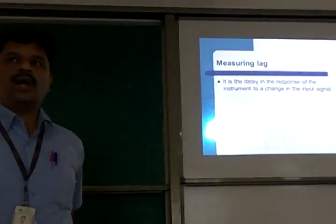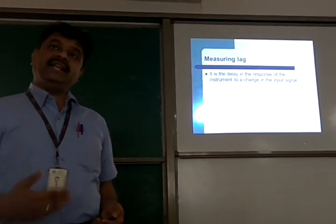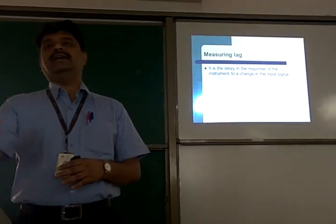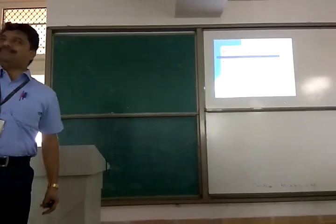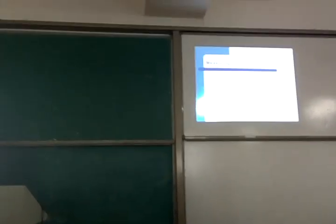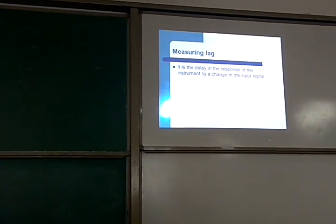Measuring lag is the delay in the response of the instrument to a change in the input signal. Response means the action by the instrument — once an input is presented, how much time it takes to show you the reading is the response time. For example, you take a thermometer and put it in a hot bath at, say, 70 degrees Celsius. The very next instant it will not show 70 degrees Celsius. The amount of time it takes to show the correct temperature is called measuring lag.